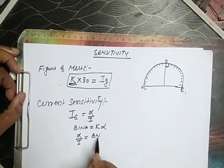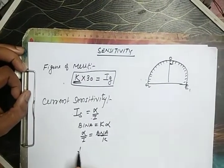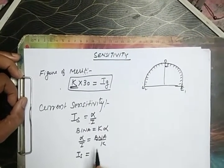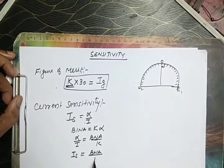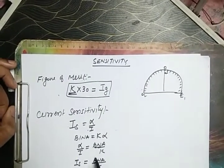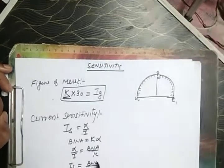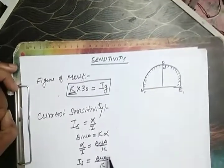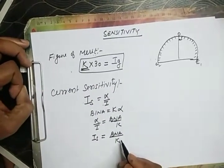And this alpha by I is called as current sensitivity. Current sensitivity of galvanometer can be increased by increasing the magnetic field, number of turns of coil, and area of the coil, or by reducing the k, that is torsional constant.